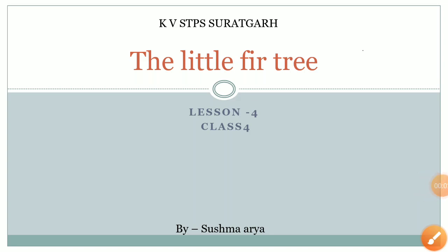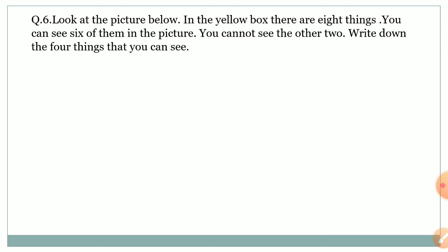Hello students, in this video we will do the next question answer of lesson 'The Little Fir Tree.' Our next question is: look at the picture below. In the yellow box there are eight things. You can see six of them in the picture; you cannot see the other two. Write down the four things that you can see.